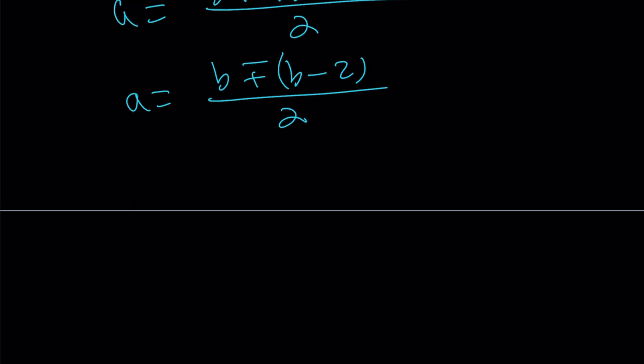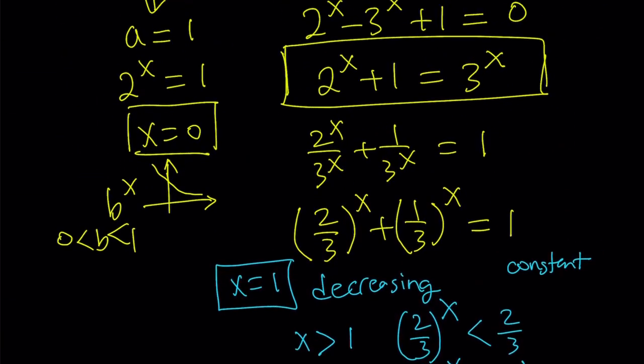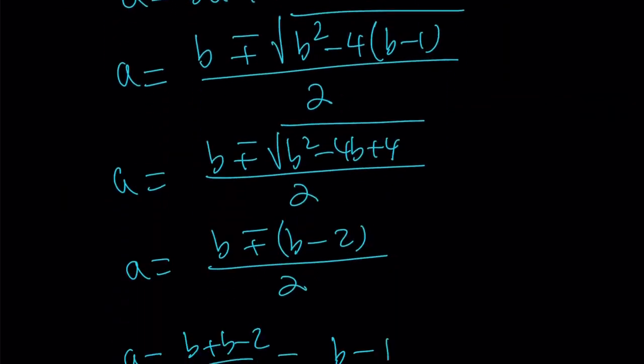If you use the plus sign, you get a equals b plus b minus 2 over 2, which is 2b or not 2b. Sorry, I had to make that joke. You're going to get b minus 1. So, what is that supposed to mean? It gives you a equals b minus 1. And you can kind of plug it in, and you're going to get one of our equations here. Easy, right? Simple.